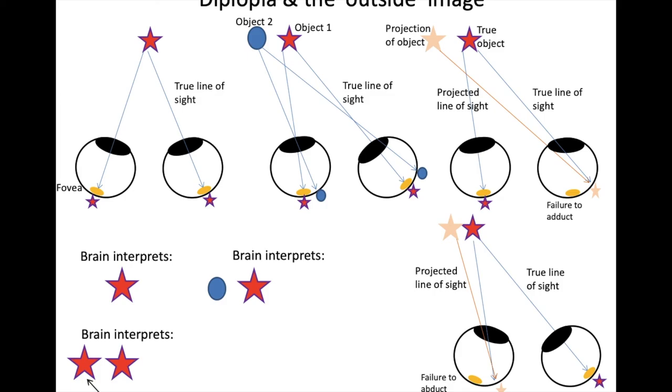...the result is always the same. The light from the true object always hits the retina of the problem eye next to the fovea, which results in the brain interpreting it, this projected line of sight, interpreting it as light coming from a second object that is lateral to the true object.